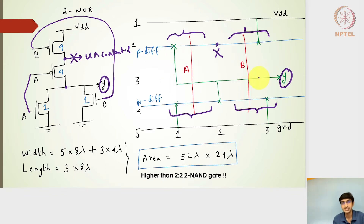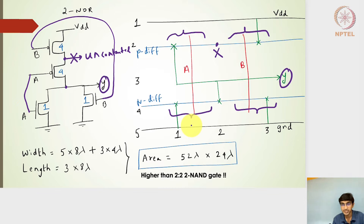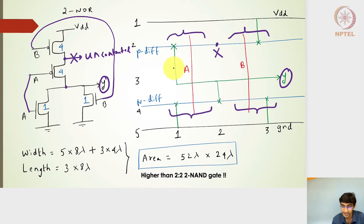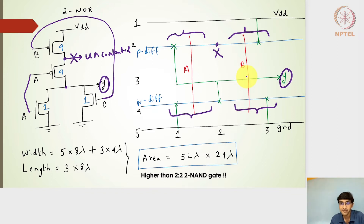If lines are of different natures — such as P diffusion overlapping with polysilicon — that is fine because P diffusion is on one layer, polysilicon on another, and metal on yet another layer. There is no unintended intersection between differently-natured lines. But if metal lines intersect or merge with each other, that is a problem. In a stick diagram, we must ensure no two lines of the same nature cross each other.